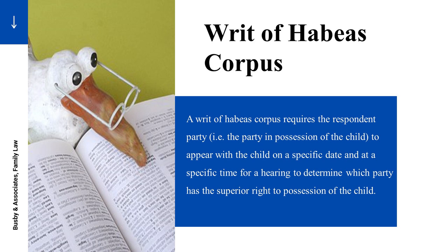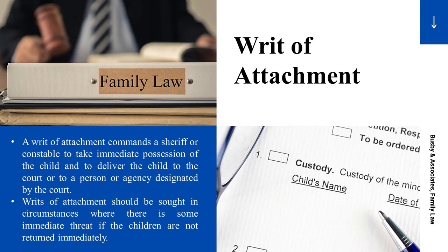It's the return of the child, and in addition there is an attorney fee award that you can prove up. With the writ of habeas corpus, if there's a danger that the child may be moving out of the state — a parent or non-parent has stated they're going to another region — you can file with the writ of habeas corpus a writ of attachment. The writ of attachment, if the court issues it, will command a sheriff or constable to take immediate possession of the child and deliver the child to the court or a person or agency designated by the court.